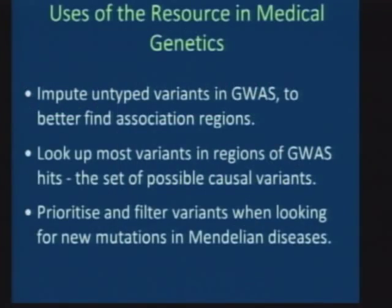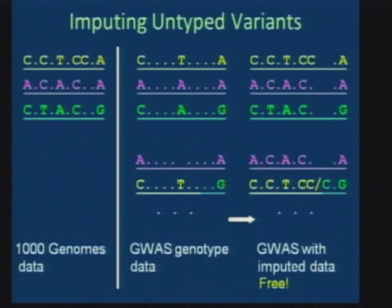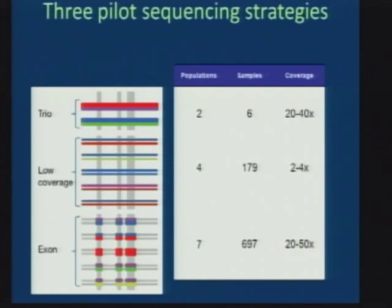Just one very quick word about imputation. It's this technique where you can essentially do genotyping for free. The idea is that you take the 1,000 Genomes data and some data you've already collected from genome-wide association studies, and then you use statistical techniques that Jeff will talk about to essentially do the filling-in process. It can be very powerful, and certainly when we get to the thousand genome samples it will massively reduce the cost of genome-wide surveys because you won't have to do the sequencing yourself necessarily.